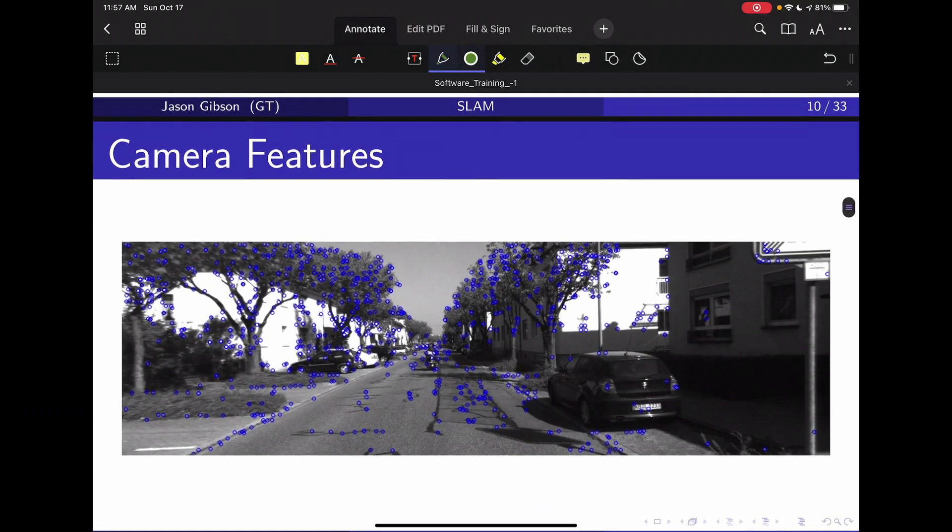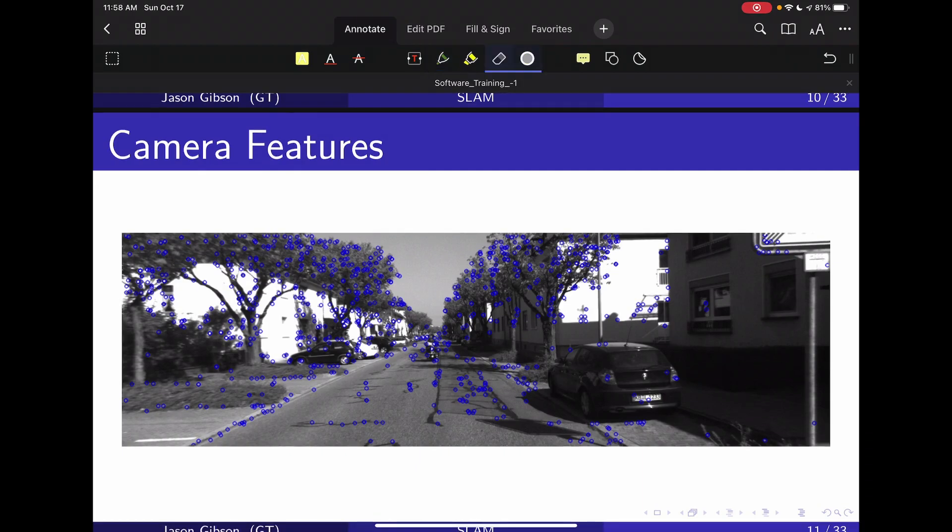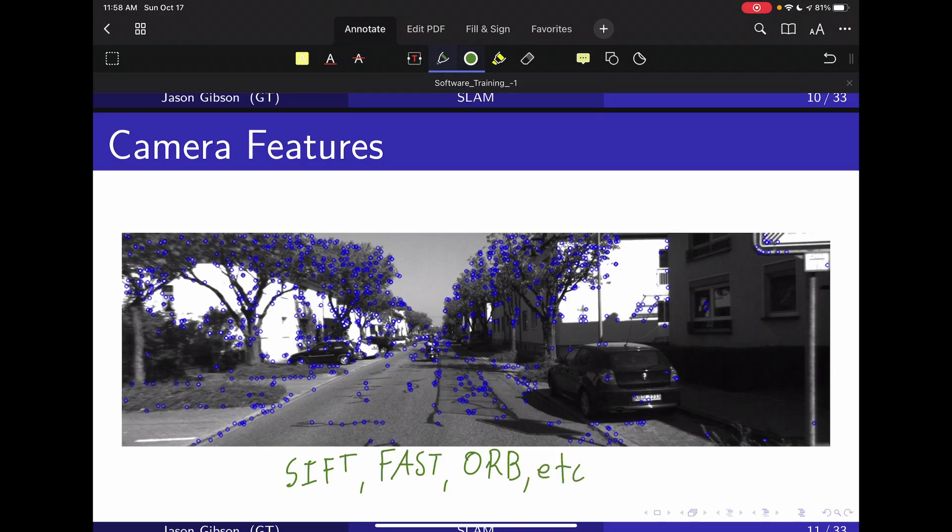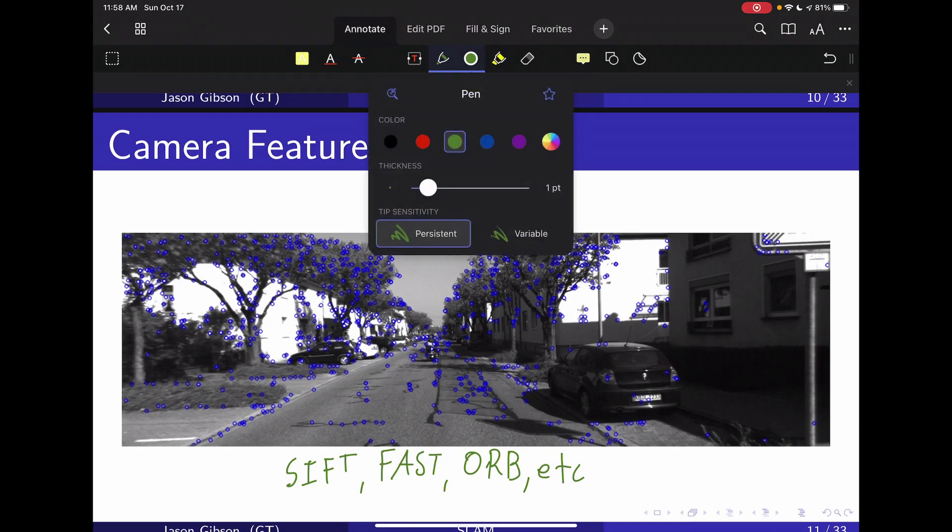The next common front end is using camera-based features. As you can see here in an image, we've represented a bunch of corners, because these are typically the things that you can see from multiple angles. These are using things called SIFT, SURF, or FAST features, or ORB features, and these stand for different types of features that can be extracted from images. I encourage you to Google search on this if you want more information.